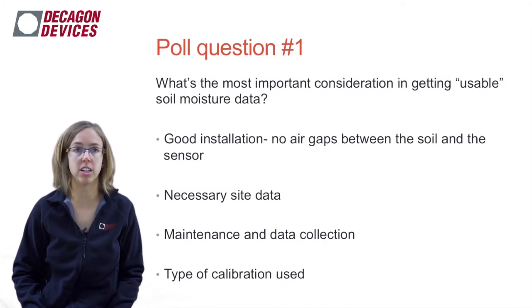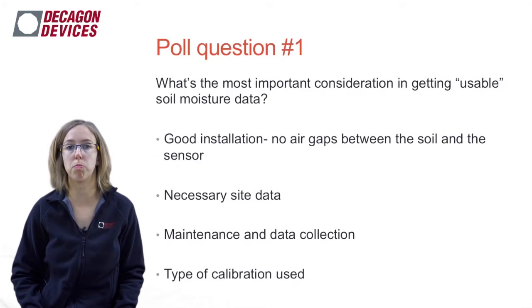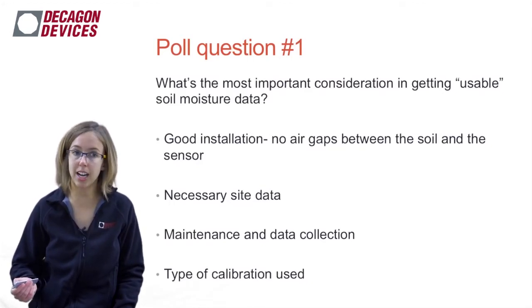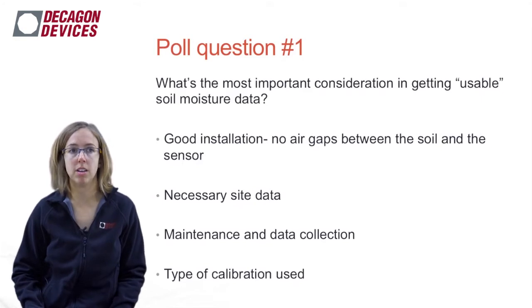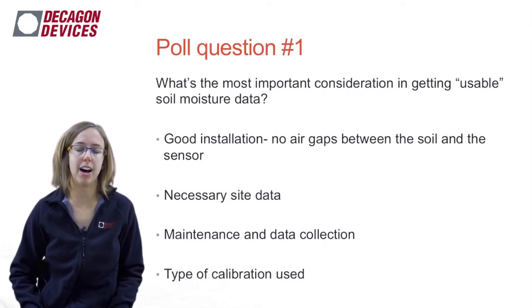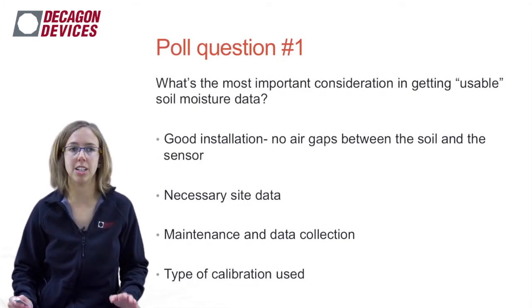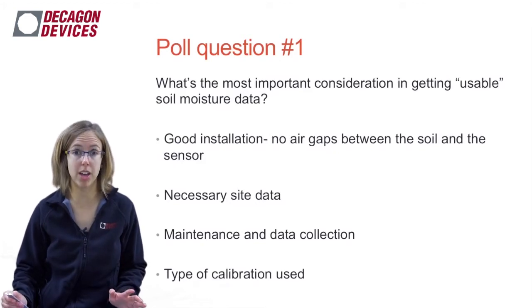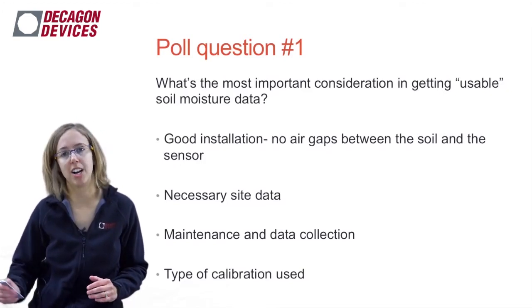Here's a thought question: of all the things we have to do to make sure the data set is good — a good installation, knowing the necessary site data, maintaining the site, or the type of calibration used — which is the most important? In my experience, about 80% of getting good usable data is in a good installation. So if you listen to nothing else, listen to that part. These other things are not very difficult to do, and that little bit of extra effort is going to get you to the 100%.